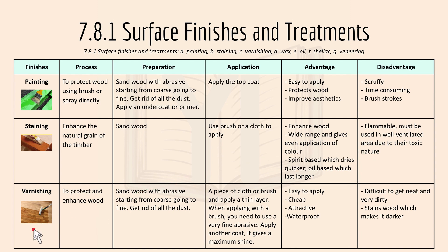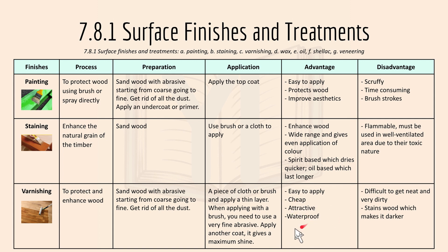Varnishing is basically used to protect and enhance wood. You sand wood with abrasive starting from coarse going to fine, to get rid of all the dust. Then use a piece of cloth or brush and apply a thin layer. When applying with a brush, you need to use a very fine abrasive and apply another coat — it gives a maximum shine. Advantages include it's easy to apply, it's cheap, it's attractive, and it's waterproof. The disadvantage is it's difficult to get neat and very dirty, and it stains wood which makes it darker.